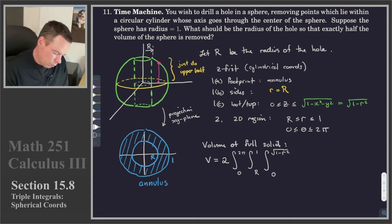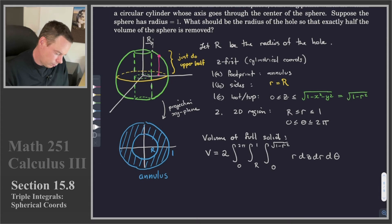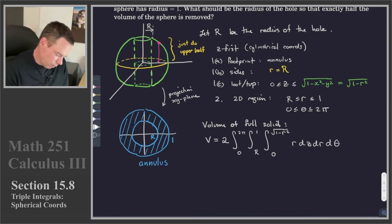And this is a volume, so we're integrating 1 dV. dV, because we chose cylindrical coordinates, is r dz dr dtheta. And so there is our volume of the full solid, set up using cylindrical coordinates.